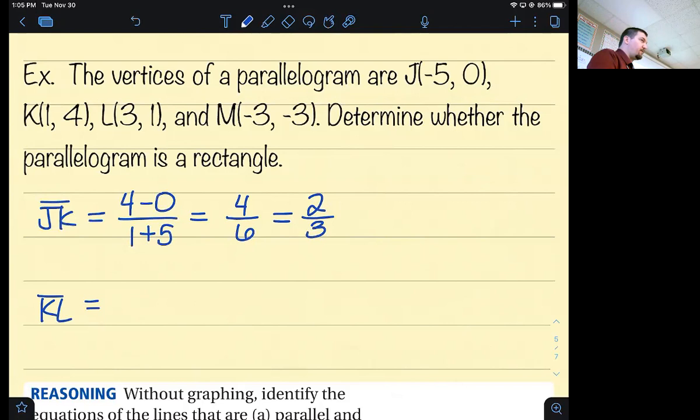So what slope am I looking for KL? I'm looking for negative 3 over 2. Let's see what we get. y₂ minus y₁ over x₂ minus x₁. When we're not timed, we should write it down to avoid silly mistakes. What's 1 minus 4? Negative 3. What's 3 minus 1? Two. So the slope is negative 3/2. They are perpendicular, so this is a rectangle.